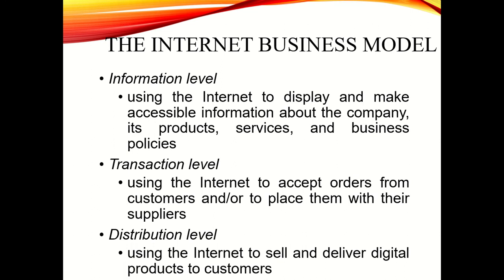Another is the distribution level. Organizations at the distribution level use the internet to sell and deliver digital products to customers. This includes subscriptions — if it is not a physical product at the transaction level, it could be online subscriptions to software products, music like Spotify, and other online and digital products. These are the three business models benefiting from electronic e-commerce organizational business strategy.